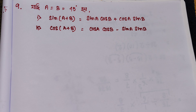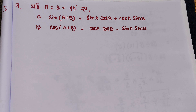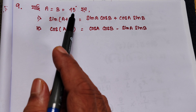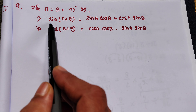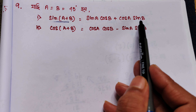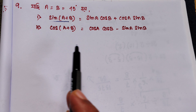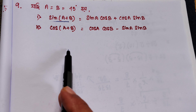Hello. I will write about NCERT Prakashash chapter 23.2, question number 9. For example, a equals b equals 45 degrees. So to verify: sin of a plus b equals sin a cos b plus cos a sin b, and cos of a plus b equals cos a cos b minus sin a sin b. This is the formula we have to use.